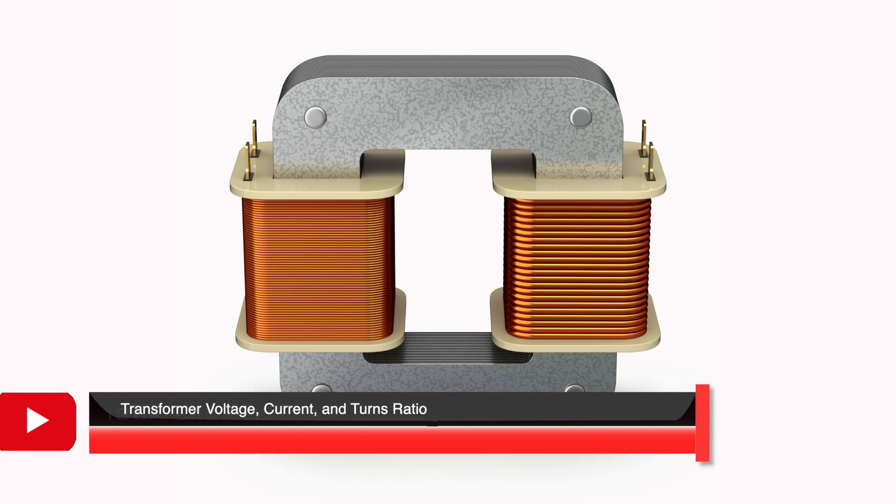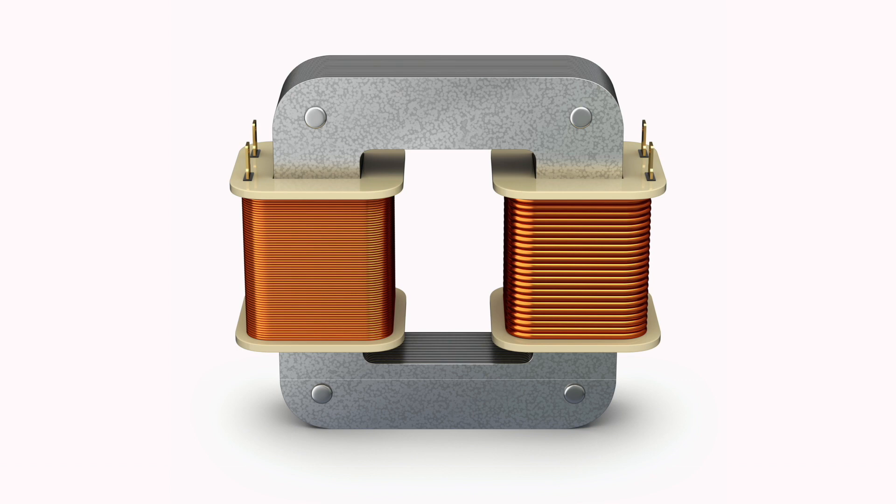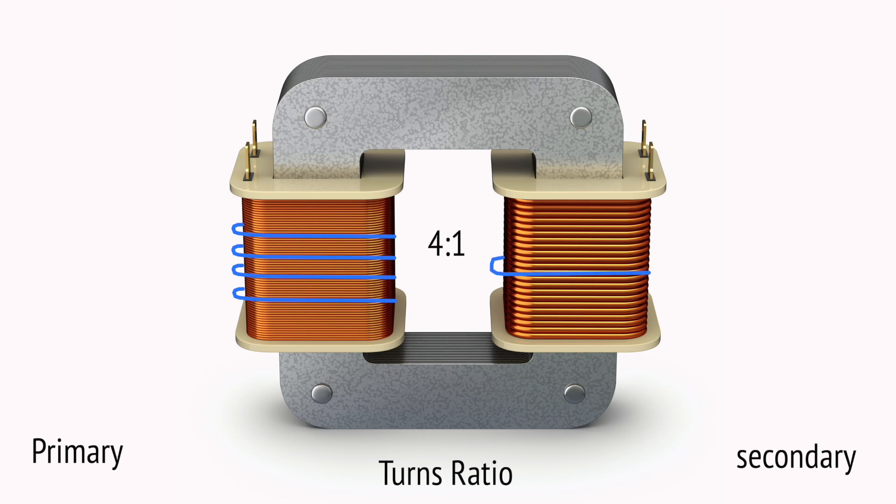What is the turns ratio in a transformer? The ratio of turns in the primary winding to those in the secondary winding is what's known as the turns ratio. For example, if a transformer has a 4 to 1 turns ratio, then for every 4 turns on the primary winding, there will be 1 turn in the secondary winding. Inputting 480 volts AC into the primary winding will produce 120 volts AC output on the secondary winding.